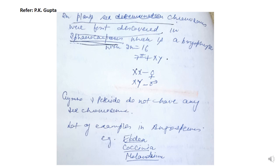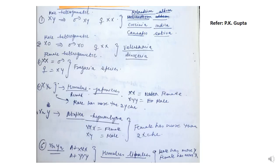In gymnosperms and pteridophytes, there are no sex chromosomes. However, there are many examples in angiosperms where sex chromosomes are found, such as Elodea, Capcoxenia, and Melandrium. Plants where sex chromosomes are found include Melandrium album, Coccinia indica, and Cannabis sativa. In these plants, the male is heterogametic with XY chromosomes and the female is homomorphic with XX chromosomes.